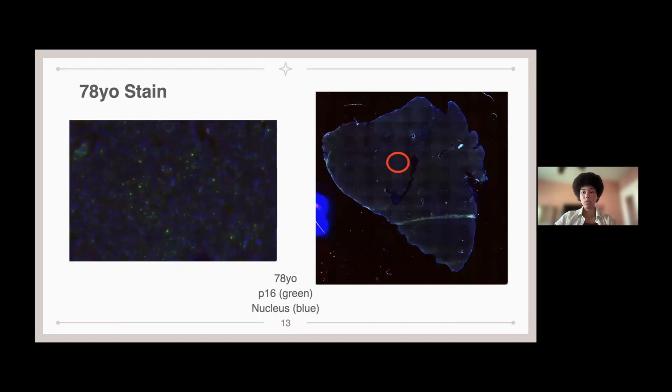And then this is simply the 78-year-old stain, which is the oldest sample we had. And as you can see, again, the P16 just simply seems to be increasing with age and increasing in the nucleus compared to the 20-year-old and even the 68-year-old.